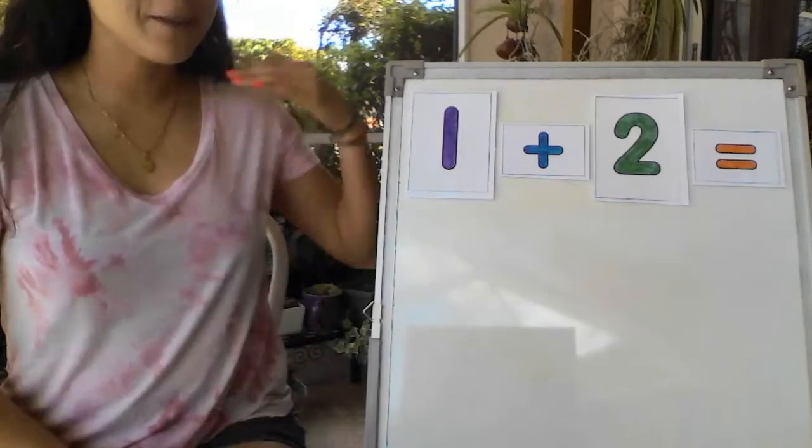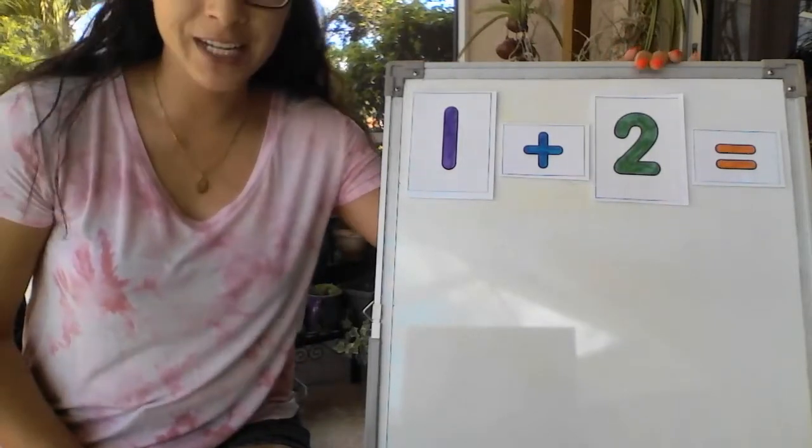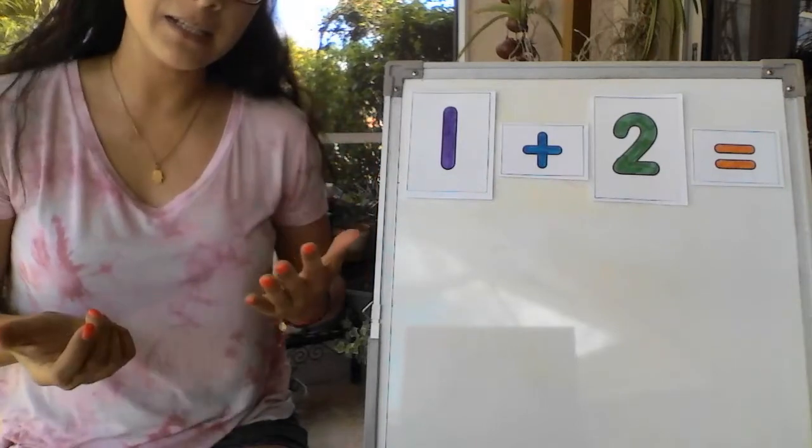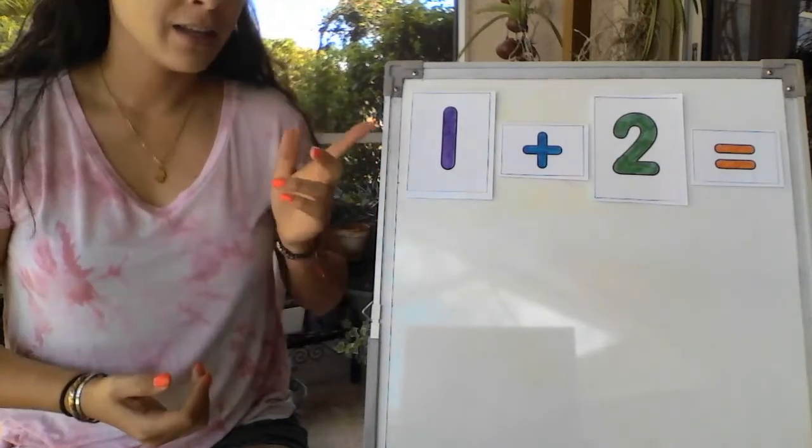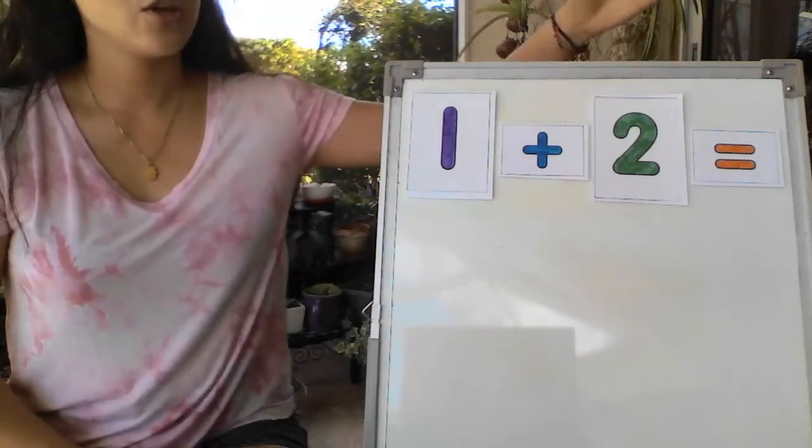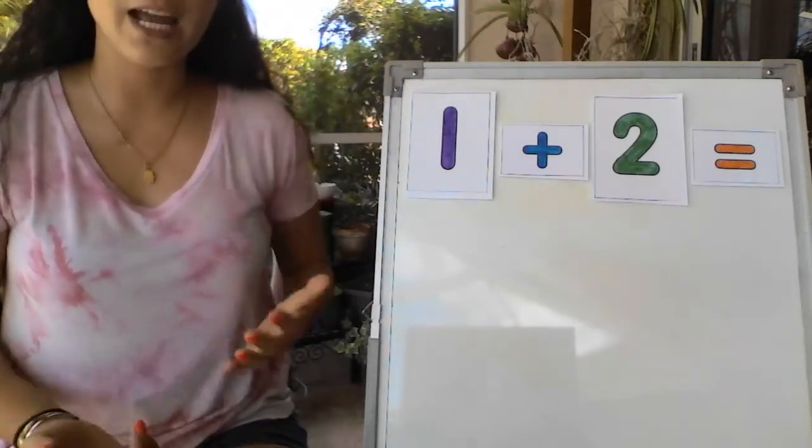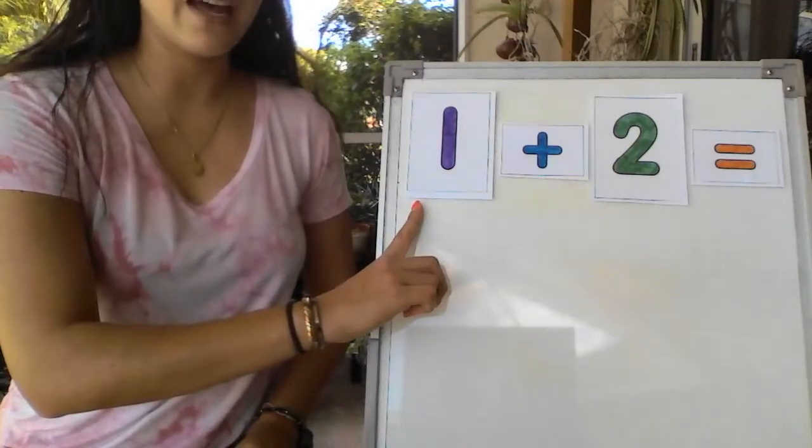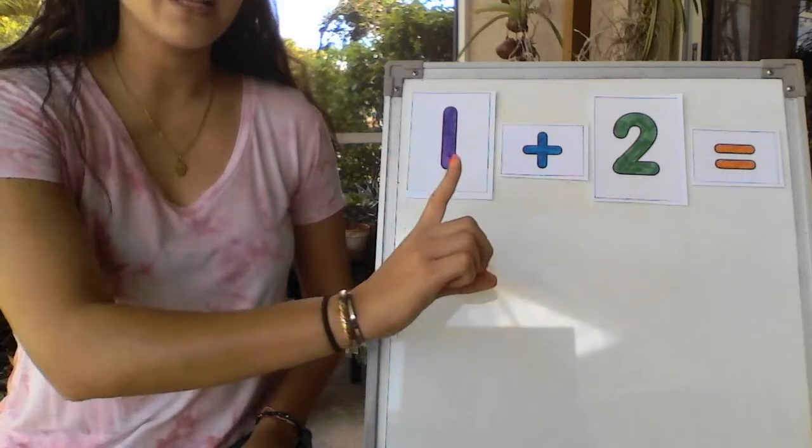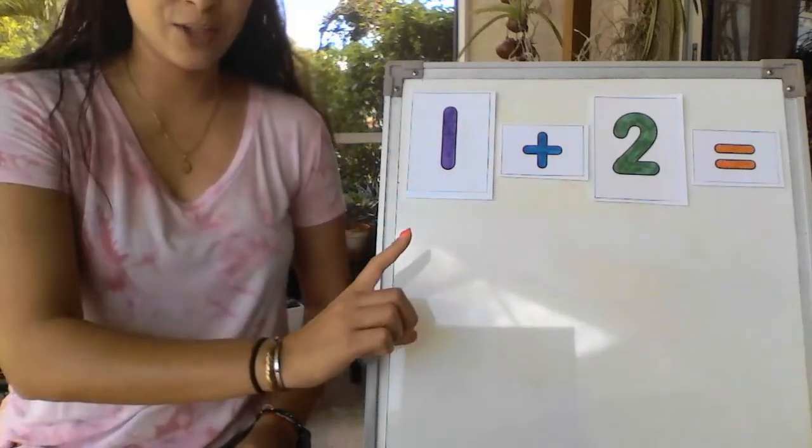All right my friends so the first thing that we have to do is we have to read what is being asked of us. So normally sentences have words. When we're dealing with math we're dealing with a number sentence. So we're going to read this just like we would any other sentence. We're going to read from left to right. So you're going to follow my finger and read exactly where I point. Let's do it together.